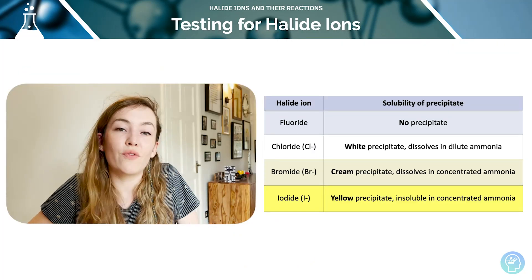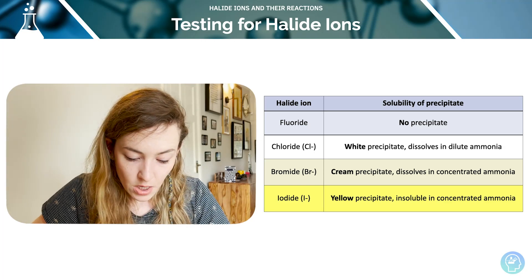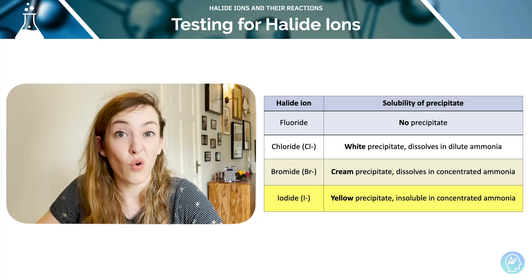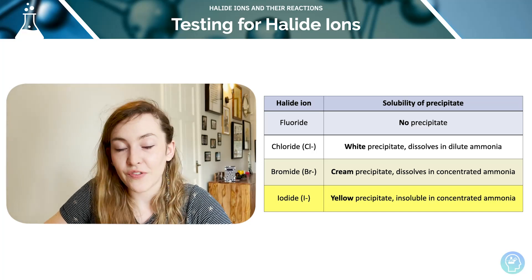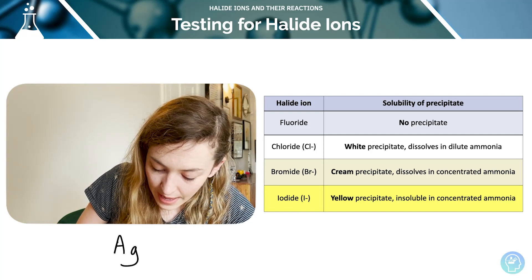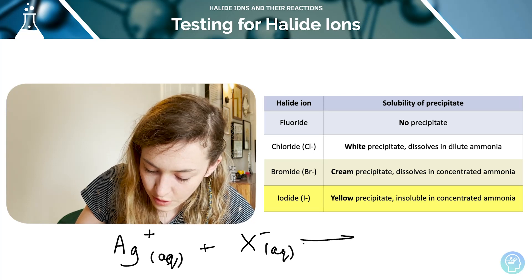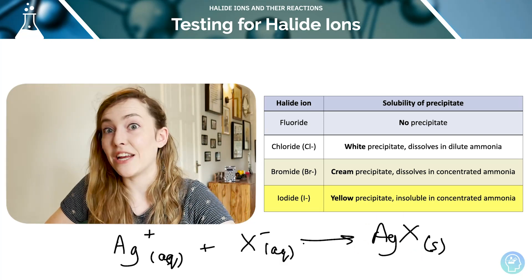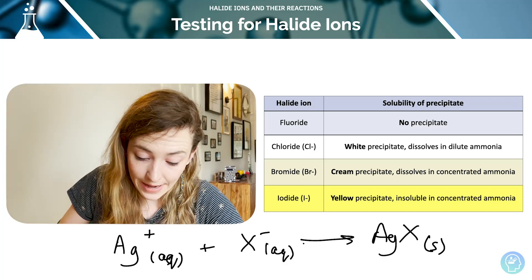We can also use silver nitrate solution to identify and distinguish between different halide ions — they form a precipitate. The solution must be acidified using dilute nitric acid first, to remove any excess ions that might interfere with the results. Acidified silver nitrate is added to the test tube, and the silver ion picks up the halide ion in solution to form a precipitate of the silver halide (AgX). The colour of that precipitate tells us which halide ion was present.